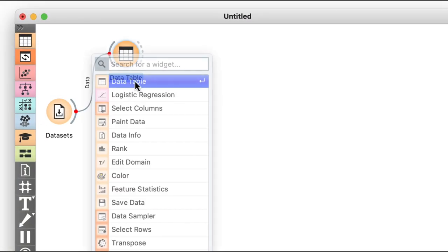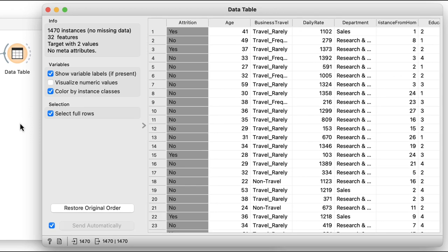Now to remind you, it includes over 1,000 employees, characterized by 32 features, and reports on whether they've left the company.